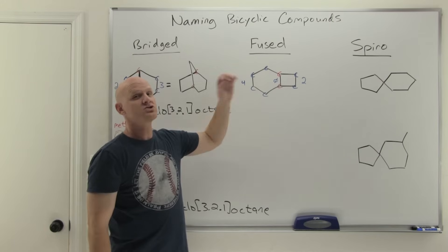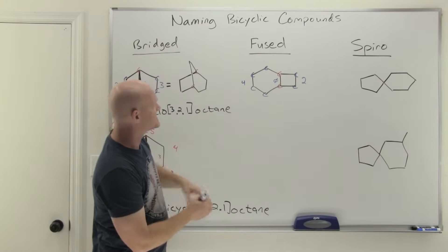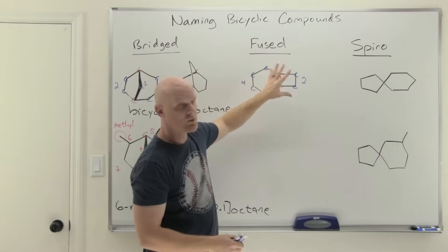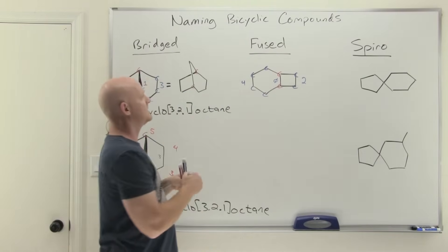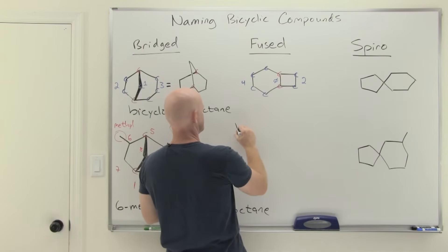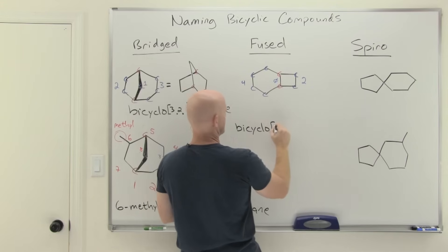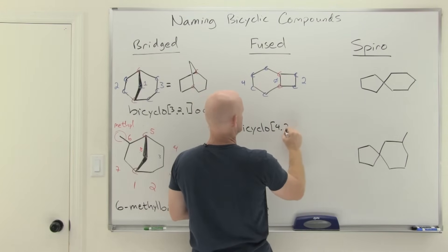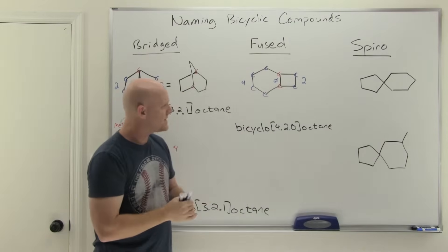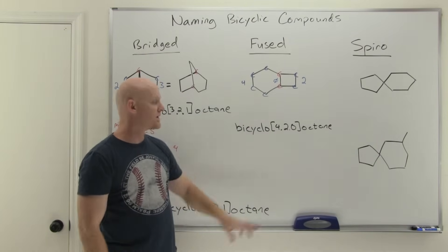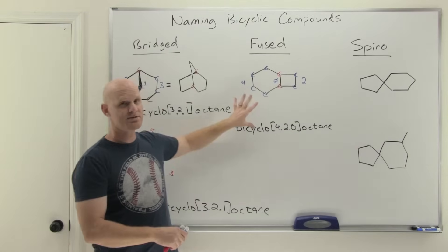That zero actually gets included in the name. With a fused bicyclic, your third number is always going to be zero, and it must be included. We've got eight total carbons, so this is going to be bicyclo[4.2.0]octane — still listing the numbers in highest-to-lowest descending order. In a fused bicyclic, that third number is always zero, but otherwise it follows the same set of rules.